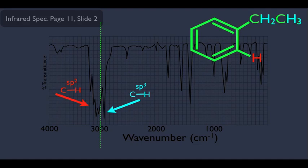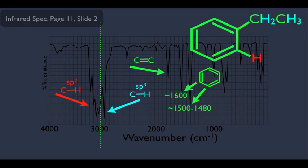While looking at this spectrum, let's notice some other important peaks. The peak for the C double bond C stretch is visible here. There are also two peaks corresponding to the benzene ring — one at around 1600 and another at around 1480 to 1500. These peaks are usually obvious on an IR spectrum, so finding them tells you right away that you have a benzene ring. On a multiple-choice exam, you can immediately rule out any answers that don't contain a benzene ring.